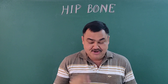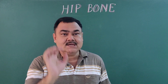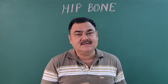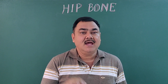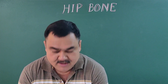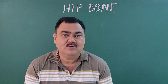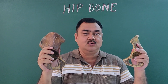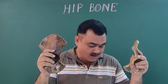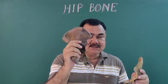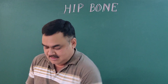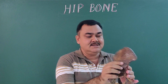We will discuss the side determination and anatomical position of the hip bone. Here you can see two hip bones. First of all, we will discuss side determination.